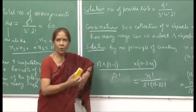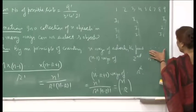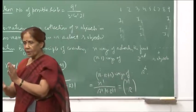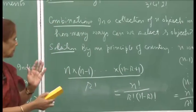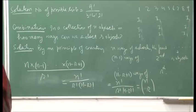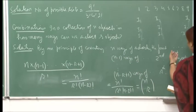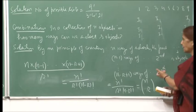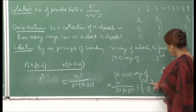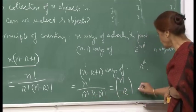This is the total number of combinations — selecting which r objects get chosen, regardless of order. In other words, you divide the n objects into a group of r and a remaining group of n−r. The total number of ways is n! / (r! × (n−r)!), written as 'n choose r'.